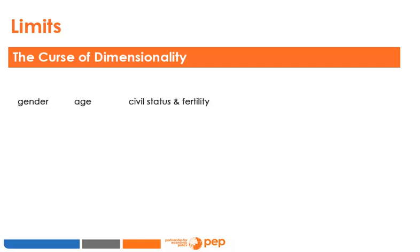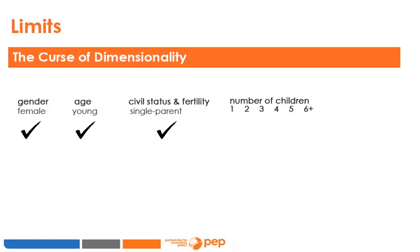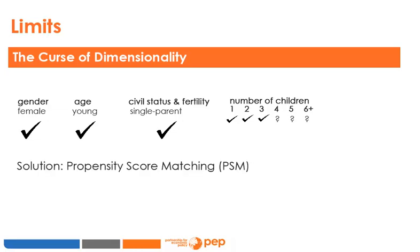For example, if you use four characteristics to find matches, this is fairly straightforward. If you are looking for young female single parents, you will probably find a sufficiently corresponding observation for each participating individual. But you run the risk of not accounting for other potentially important characteristics which also affect participation and the outcome. You could expand the list of matching variables — for example by adding number of children and years of education — but the comparison group database may not contain a sufficient number of observations to effectively implement pairing. Fortunately, the dimensionality problem can be avoided by using propensity score matching, which we will study in the next module.